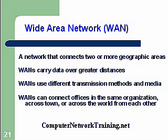WANs use different transmission methods, different types of technologies, and different media. Most of the WANs we connect to today for the internet are done with fiber optics, running at about 10 gigabytes right now. WANs can connect offices in the same organization across town or across the world. An office in California and one in New York can share resources across the network just like if they were in the same building, creating a lot of convenience for accessing data, files, information, programs, and other resources.